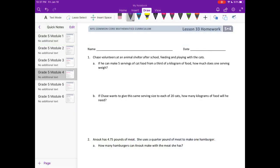Lesson 33 homework, number one. Chase volunteers in an animal shelter after school, feeding and playing with the cats. If he can make five servings of cat food from one third of a kilogram of food, how much does one serving weigh? So we can make five servings from one third of a kilogram.